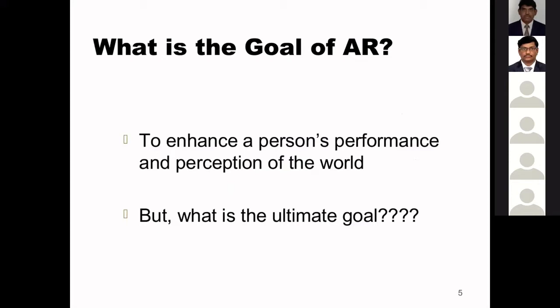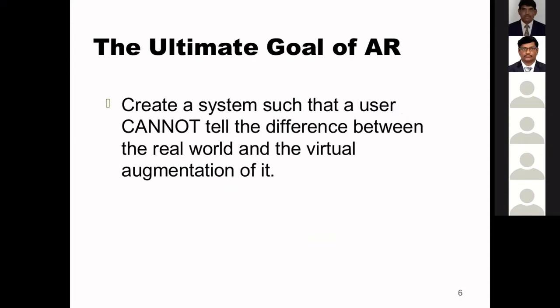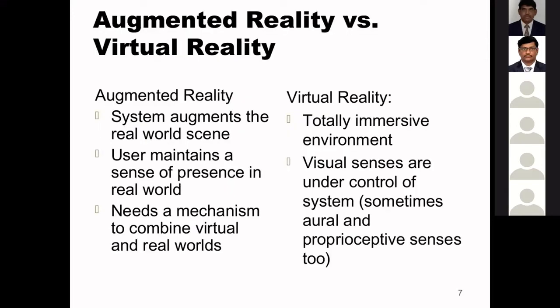The goal of AR is to enhance a person's performance and perception of the world — it increases the viewing experience in the real world. The ultimate goal is to create a system such that a user cannot tell the difference between the real world and the virtual augmentation of it. For example, applications like Google Goggles help us identify what place or building we are looking at.